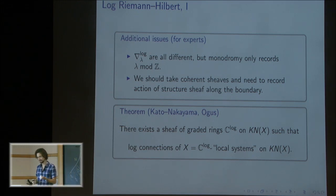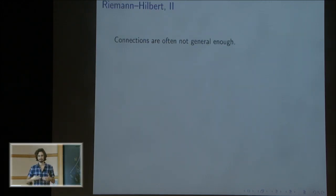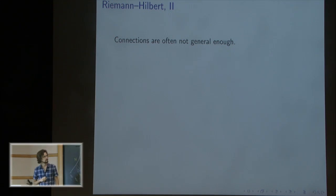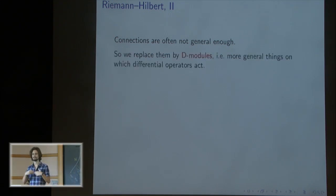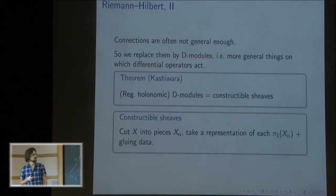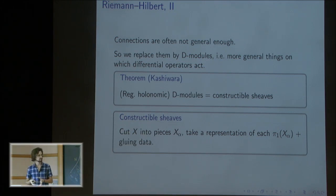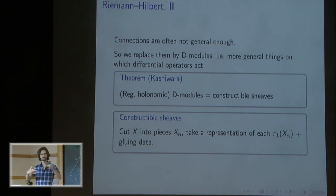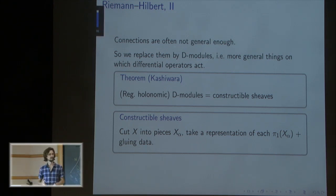So we've done connections, log connections. But connections are not quite general enough — you often want something concentrated on a subspace, which wouldn't be a vector bundle. This leads to the classical theory of D-modules: more general objects on which differential operators act. You get a very similar classification theorem, also called the Riemann-Hilbert correspondence: D-modules with certain adjectives are the same as constructible sheaves — a fancy way of saying you cut your space into pieces, take a representation of the fundamental group of each piece, plus additional data on how everything fits together.